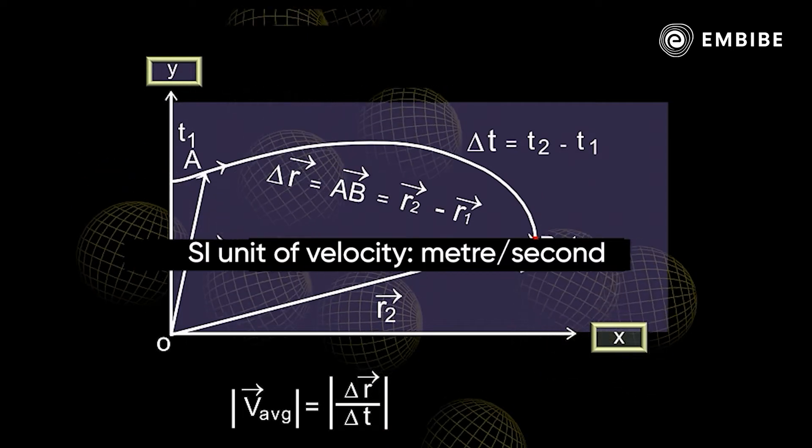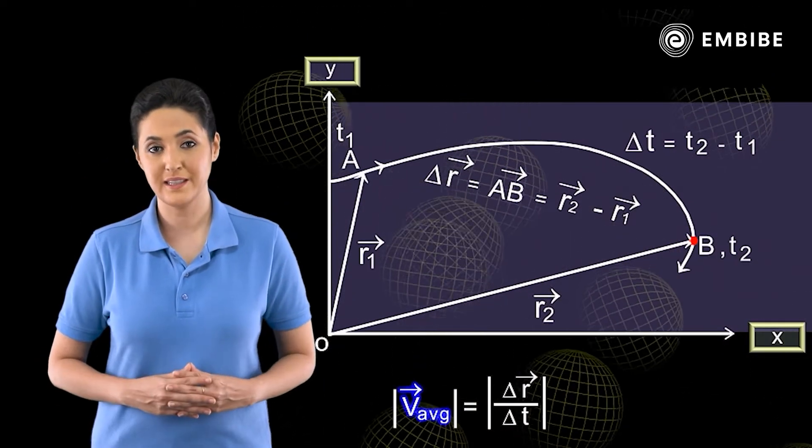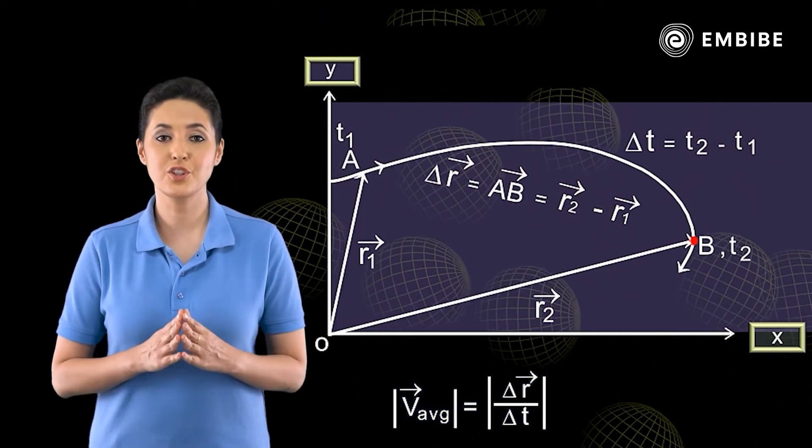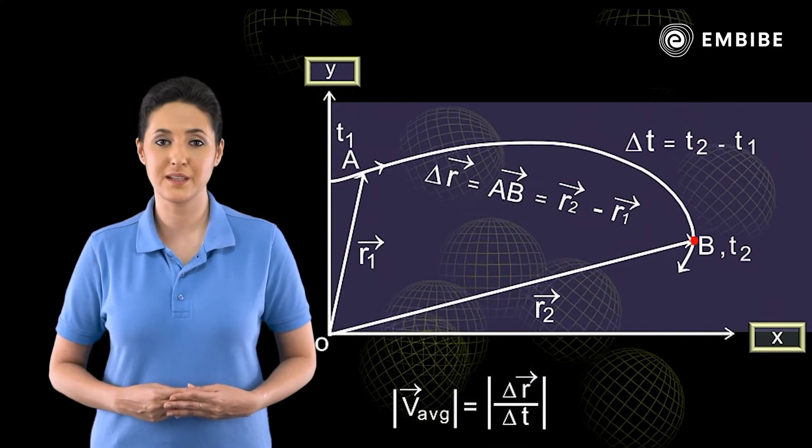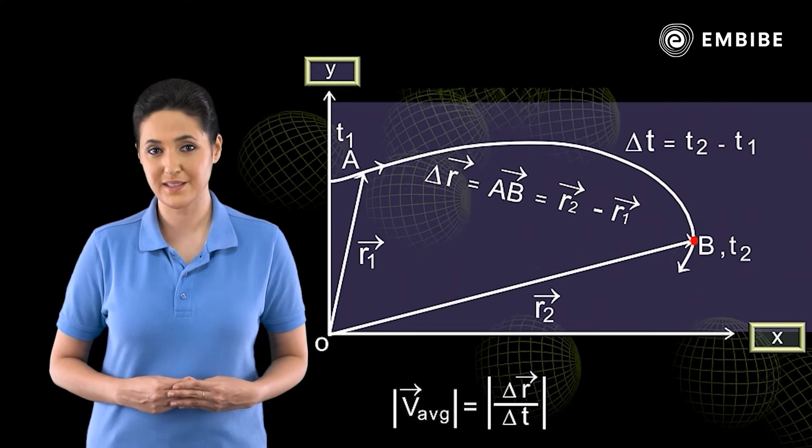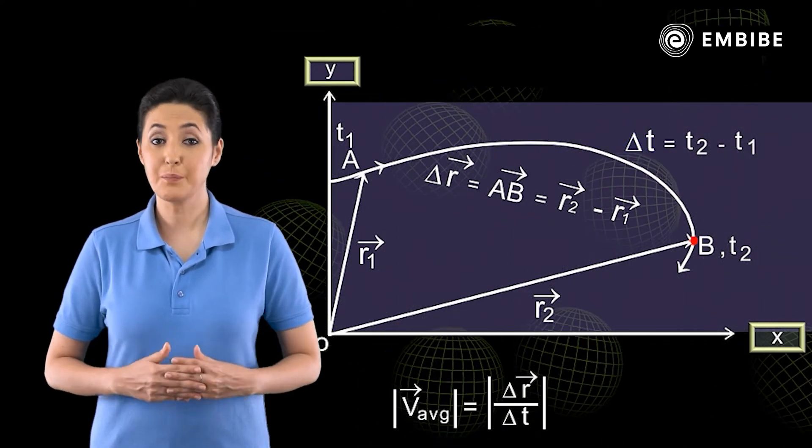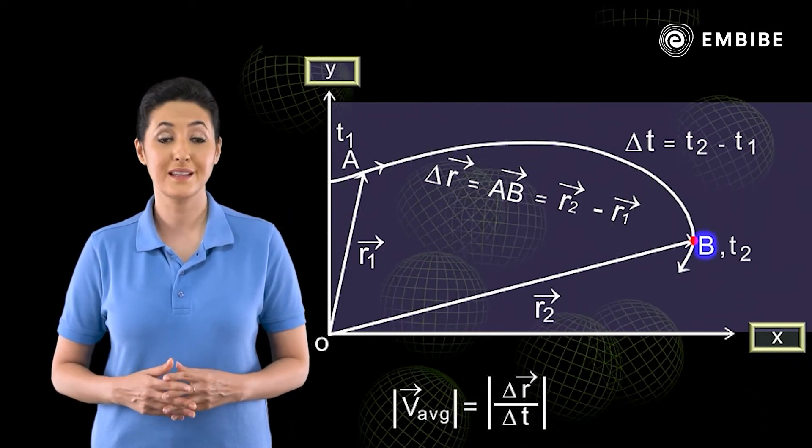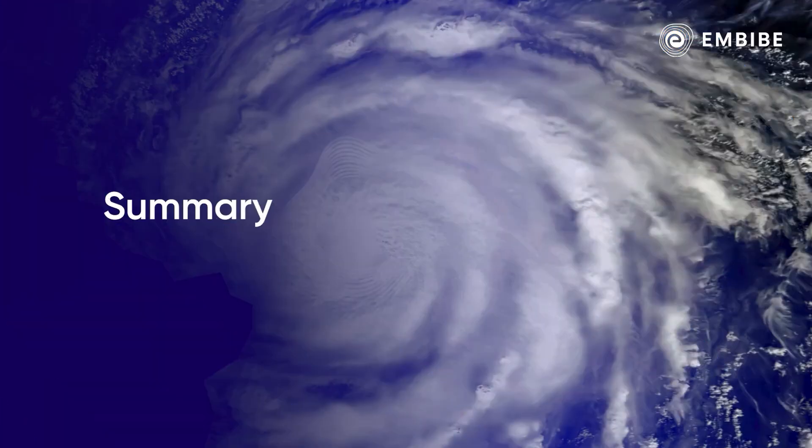The reason for calling average velocity as per the definition of equation is that during the time interval delta t, changes in the velocity of the particle might have taken place. During the time interval delta t, the path of the motion from point A to point B can be curved or straight.